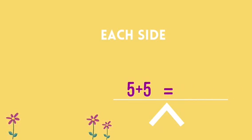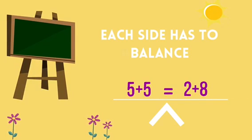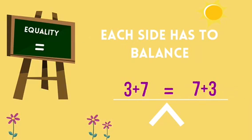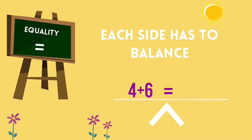Each side has to balance. Five plus five is the same as two plus eight. Three plus seven is the same as seven plus three.